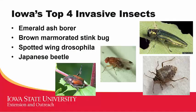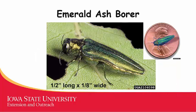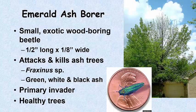You're probably familiar with the four invasive insects I'm going to talk about as pests in Iowa: the emerald ash borer, the brown marmorated stink bug, the spotted wing drosophila, and the Japanese beetle. Starting with the emerald ash borer — it's a small insect, only about half an inch long and an eighth of an inch wide, as you can see from its presence on Lincoln's head on a penny. It is a very long, slender wood-boring beetle that lives inside trees and attacks and kills ash trees — all trees in the genus Fraxinus.